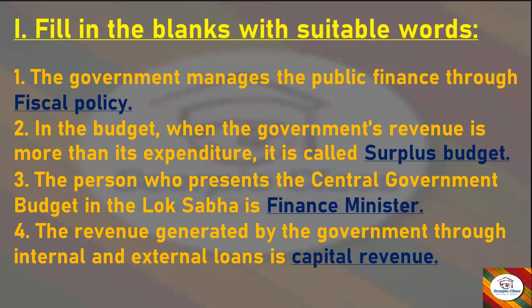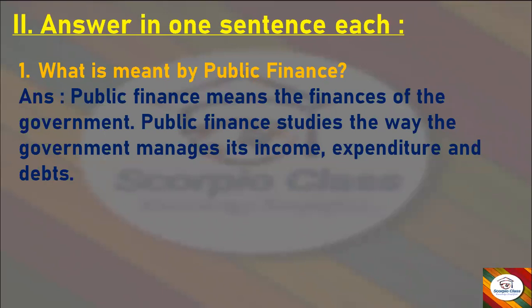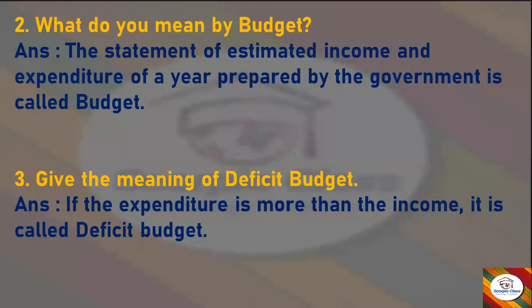Now let's go to the 'Answer the Following in Short' section. First question: what is meant by public finance? Answer: public finance means the finances of the government. Public finance studies the way the government manages its income, expenditure, and debts. Next question: what do you mean by budget? Answer: the statement of estimated income and expenditure of a year prepared by the government is called budget.